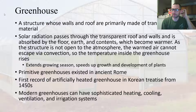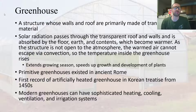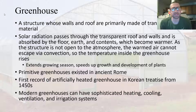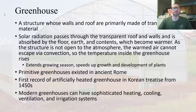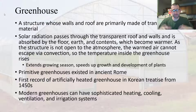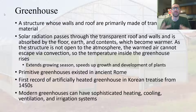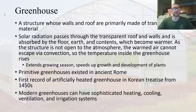Let's start with probably the most well-known structure, and that is a greenhouse. Basically it is a structure whose walls and roof are primarily made of transparent material. This allows solar radiation to pass through the walls and the roof, and it gets absorbed by the contents within the structure — the floor, the earth, the plants.